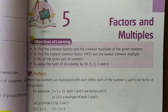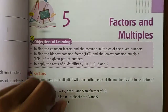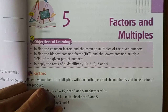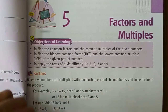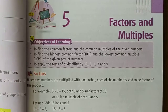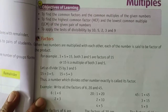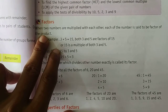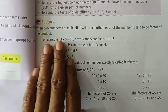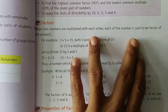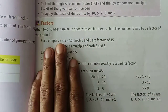Factor means Gulankhand and Multiples means Utai Gulans. So in this video we are going to talk about Gulankhand and Gulans. Now, what are the factors? Let's talk about it. Factors are when two numbers are multiplied with each other, each of the numbers is said to be a factor of the product.